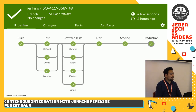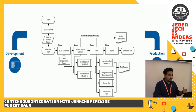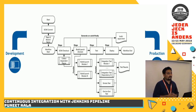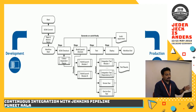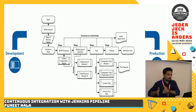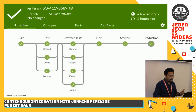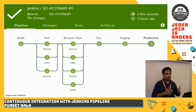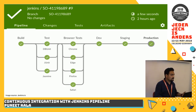Just to recap for those who joined: this is an introduction about Jenkins pipeline covering the typical scenario. A typical Jenkins build would look like this — you have different stages, which you can name: test, browser test, dev packaging, stage deployment, and production server deployment. That's how a typical Jenkins pipeline looks.